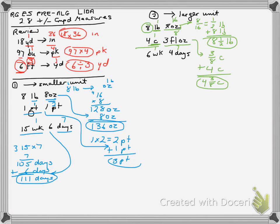Let's look at one more example. We know there are 7 days in 1 week, and we're converting again to the larger unit, which is weeks. So I need to convert 4 days to weeks by dividing — just make it a fraction. None of these examples, except the first one, allow you to simplify the fraction, but always simplify if you can. We add the 6 weeks, giving 6 and 4/7 weeks.